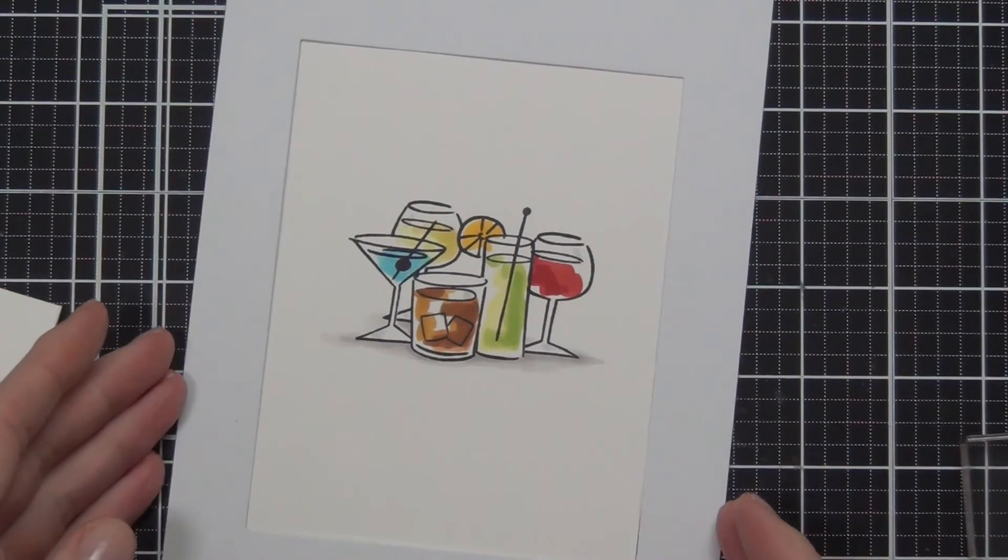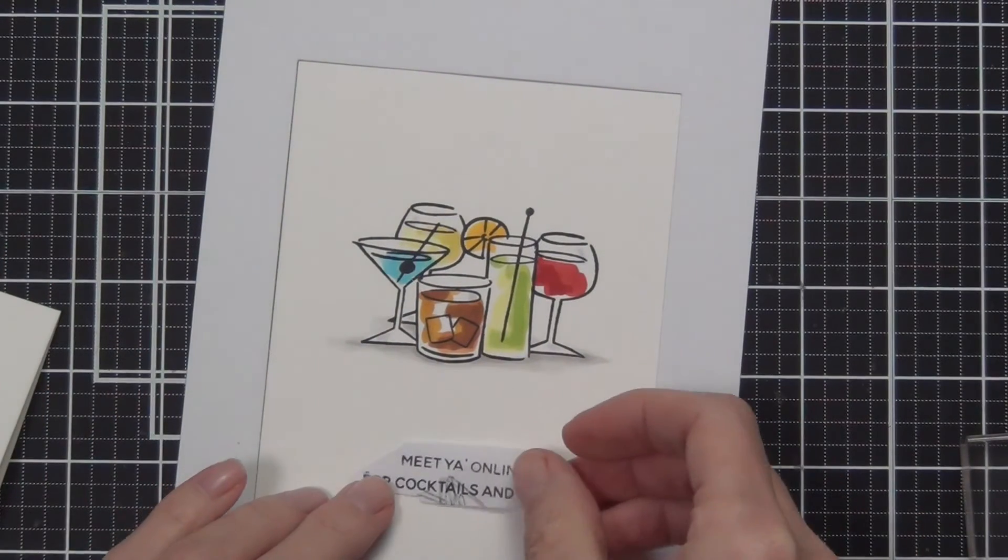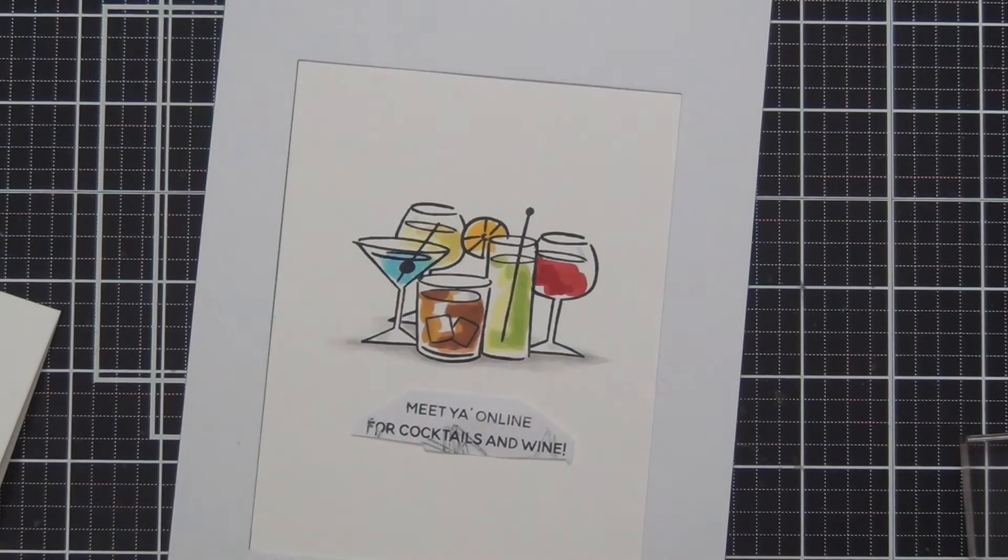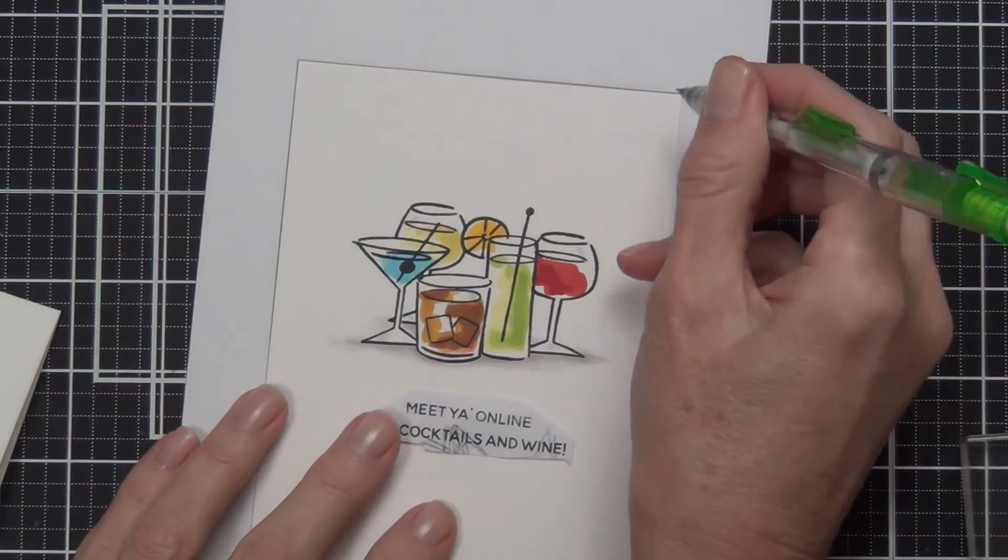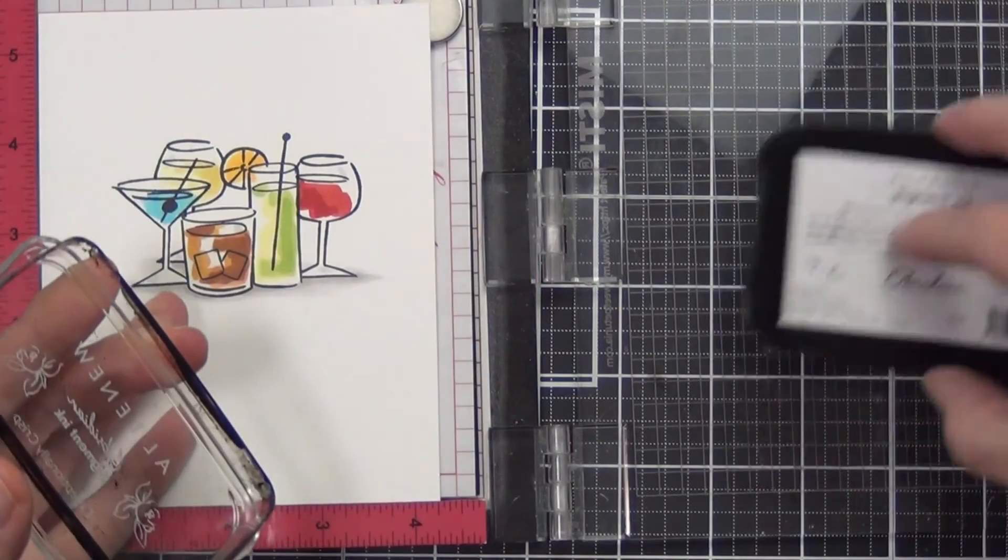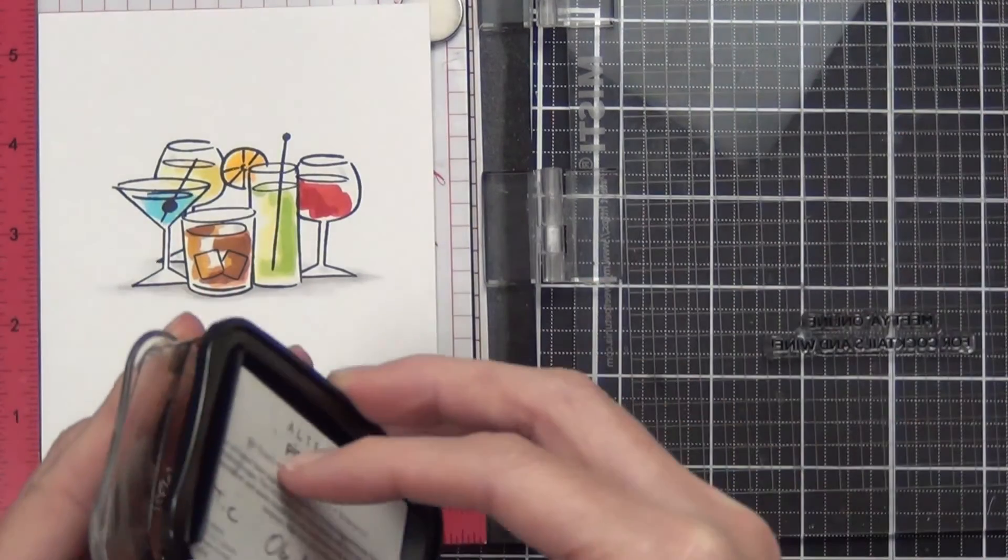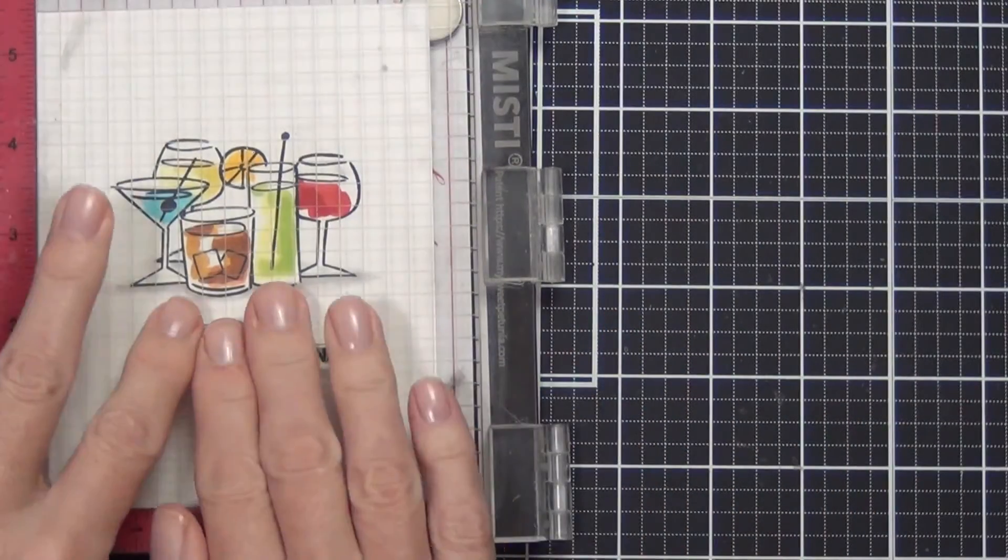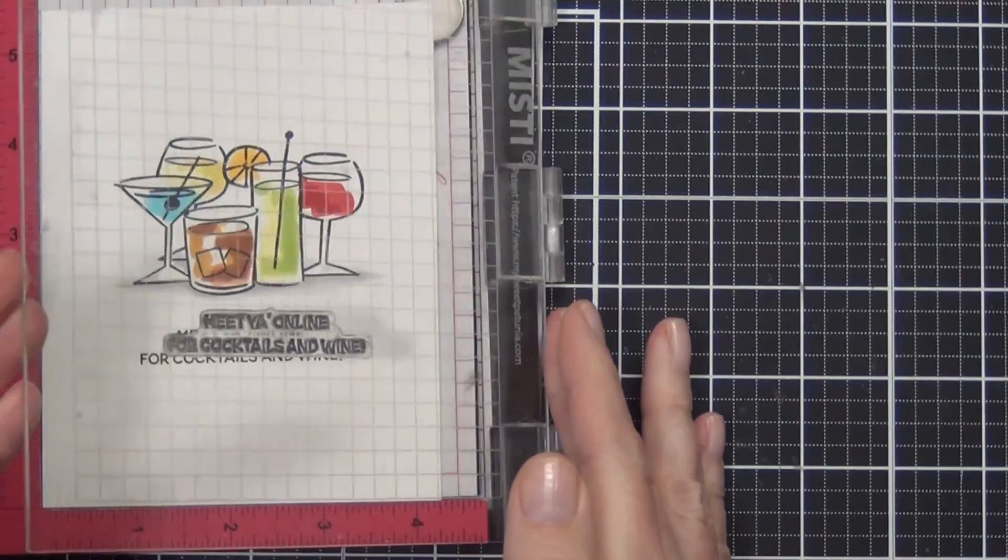I've got my little window back again to work out where my sentiment is going to be. This is from the volume 3 set. I stamped it on some scrap paper, cut it out, and then moved it around on my card front to get the placement I want. I'm stamping it with obsidian black ink and then attaching it to the front of my card.